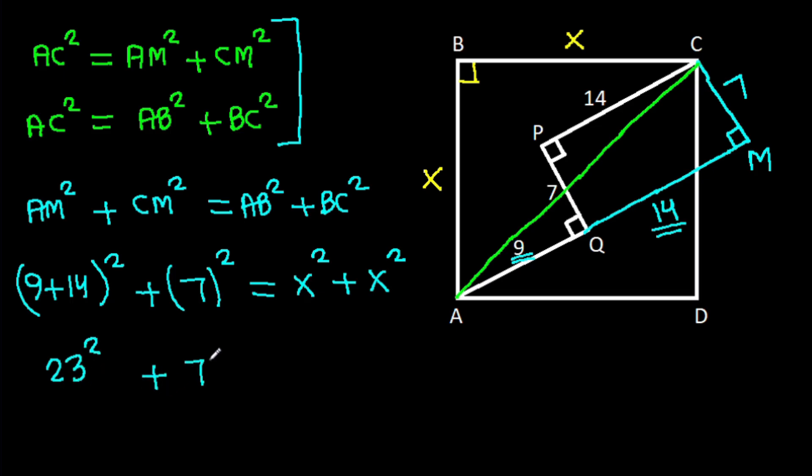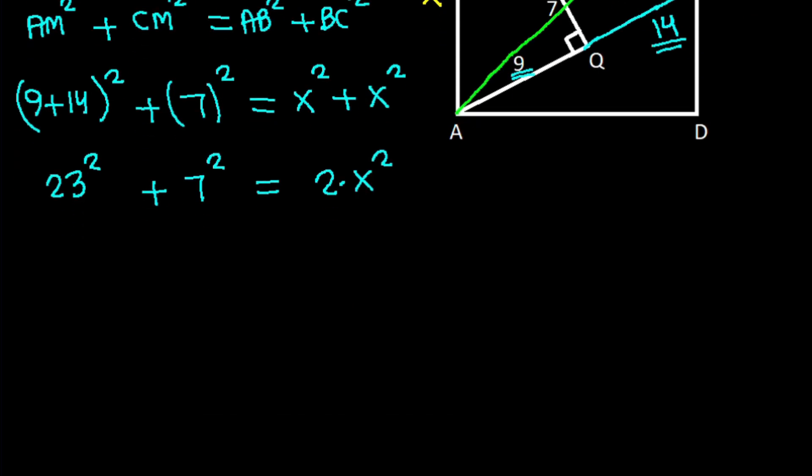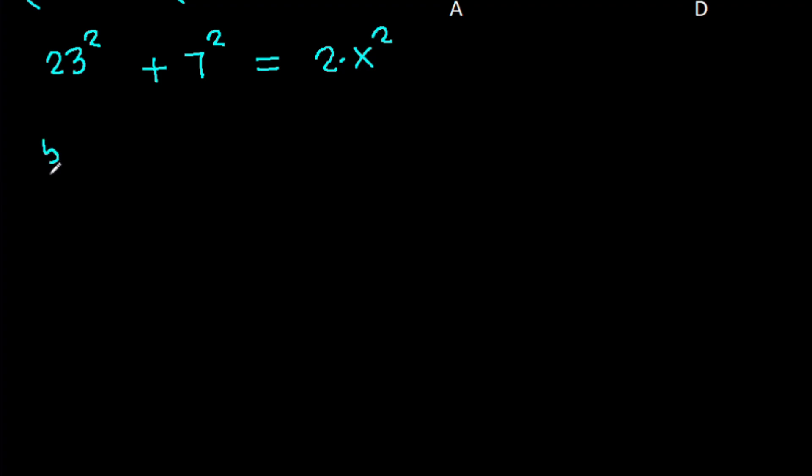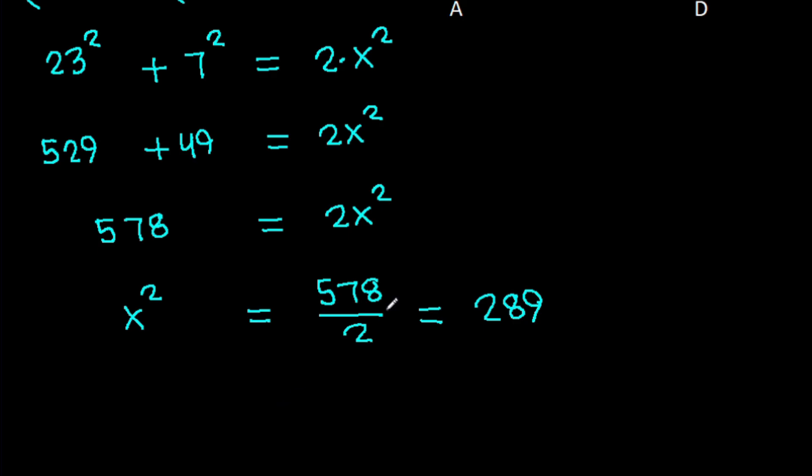This gives us 529 plus 49 equals 2X squared, which is 578 equals 2X squared. So X squared will be 578 over 2, that will be 289, and area of ABCD will be X squared, that is 289.